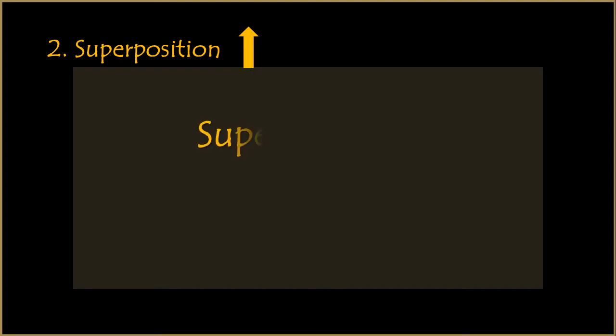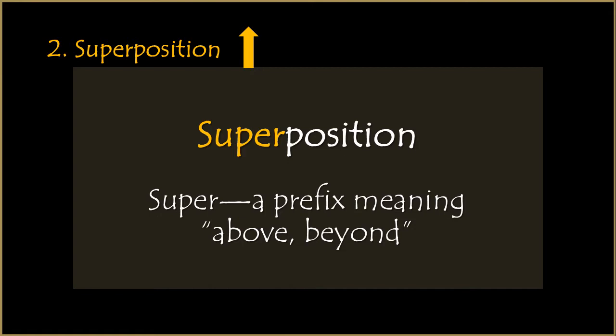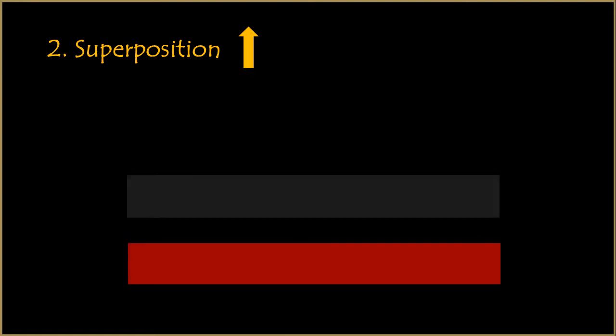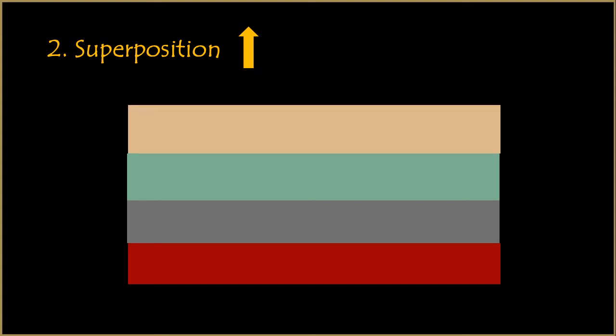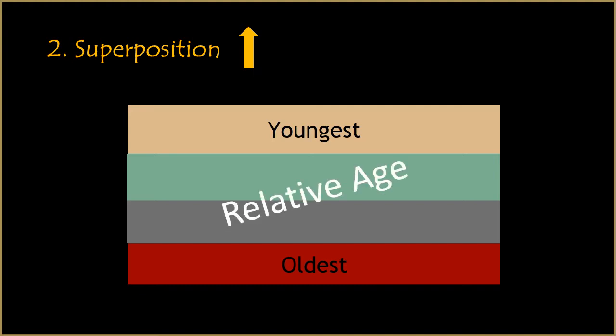To understand the second principle — the principle of superposition — think about the meaning of the prefix "super." It means above or beyond. This can help you remember that each new layer was deposited horizontally above the layer before it. As long as the layers of rock have not been disturbed, the principle of superposition assumes that upper layers are younger than the lower layers. We call this relative age, because we don't know exactly how old the layers are — we just know that each is younger or older in relation to the layers around it.